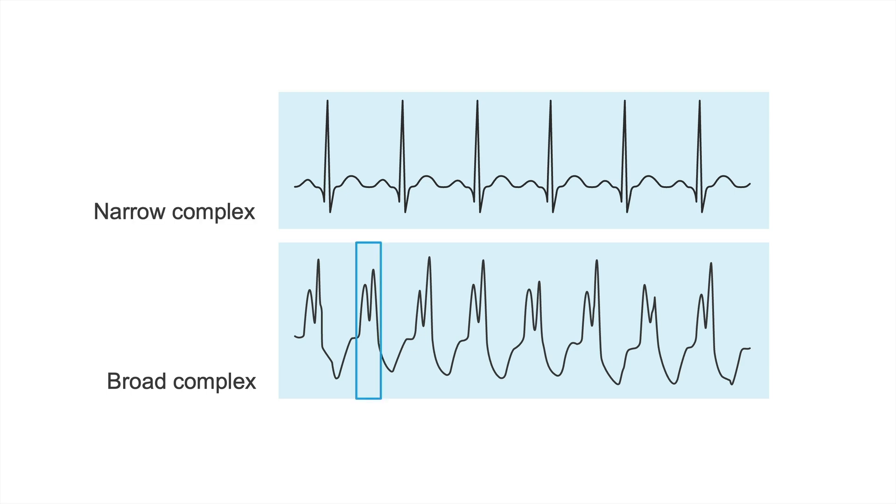Here, the distance from the beginning to the end of the QRS complex is 0.12 seconds, and as we already know, that is too broad. In the example above, the distance from the beginning to the end of the QRS complexes is 0.06 seconds, so this is a narrow complex tachycardia.